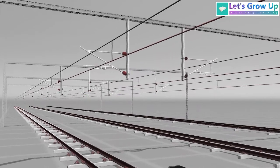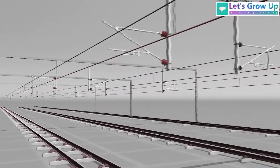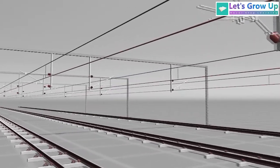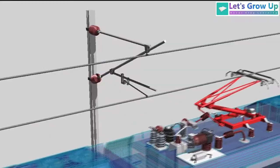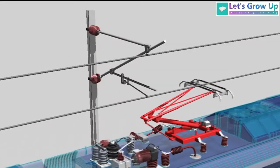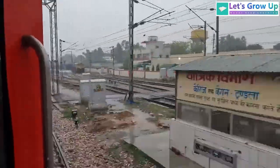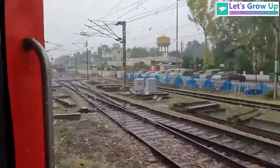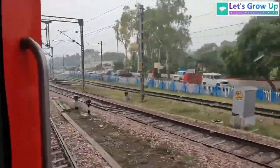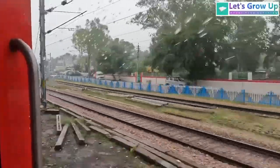Higher voltages allow for lower currents for the same amount of power transmission, which reduces the size and cost of the conductors needed for the system. This is why high voltage transmission systems, such as those used in railway electrification at 25 kilovolts, are preferred for efficient power distribution over long distances.